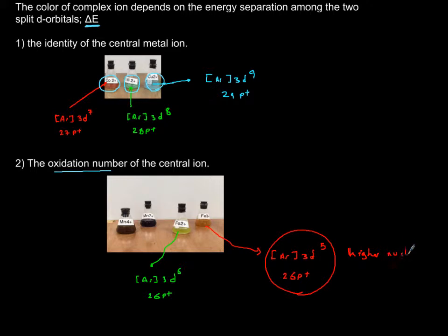Higher nuclear charge, held to the nucleus much more tightly, and there is more energy needed in order to make that electron transition between the two d orbitals.